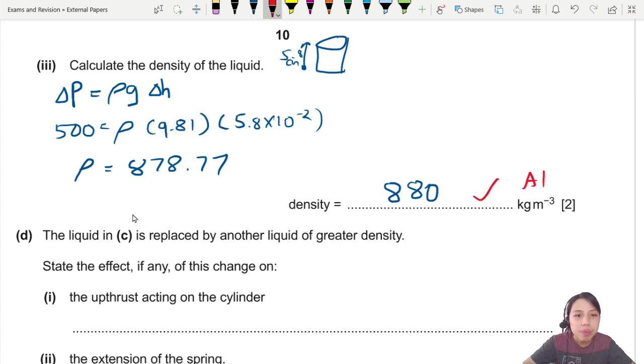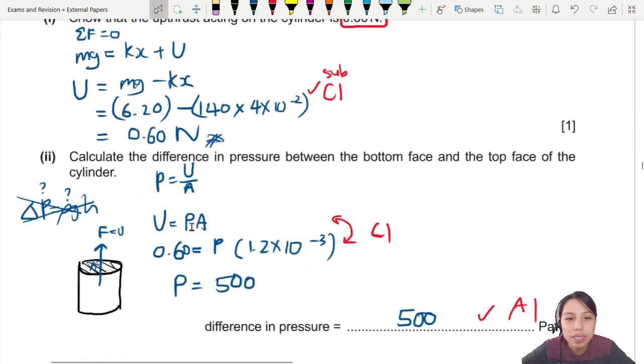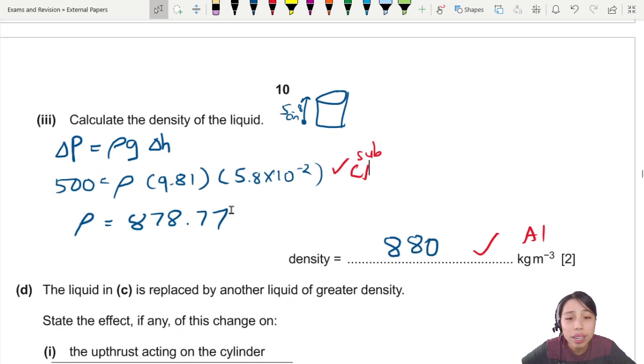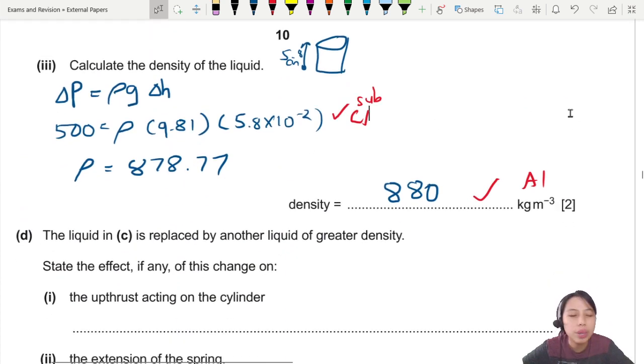One mark here. One mark if I sub into the correct values. All the 500, 9.81, and 5.8. So this one, kind of a bit hard. If you are here, you don't know what the value is, then you're kind of stuck. It's okay. If you don't know, you're stuck, you just write some equations. You might get a mark from it. Maybe.